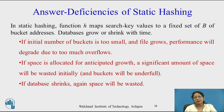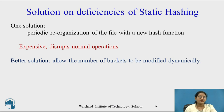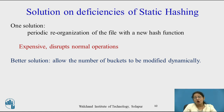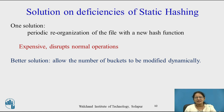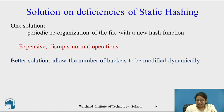If the database shrinks, space will again be wasted. What is the solution to the deficiencies of static hashing? One solution is periodic reorganization of the file with a new hash function. However, periodic reorganization sounds expensive because maintenance increases and it disrupts normal operation. Shrinking and growing of a database is natural, so how many times can you do periodic reorganization? A better solution is to allow the number of buckets to be modified dynamically. The disadvantage of static hashing is that buckets are fixed, so instead allow the number of buckets to be modified dynamically.